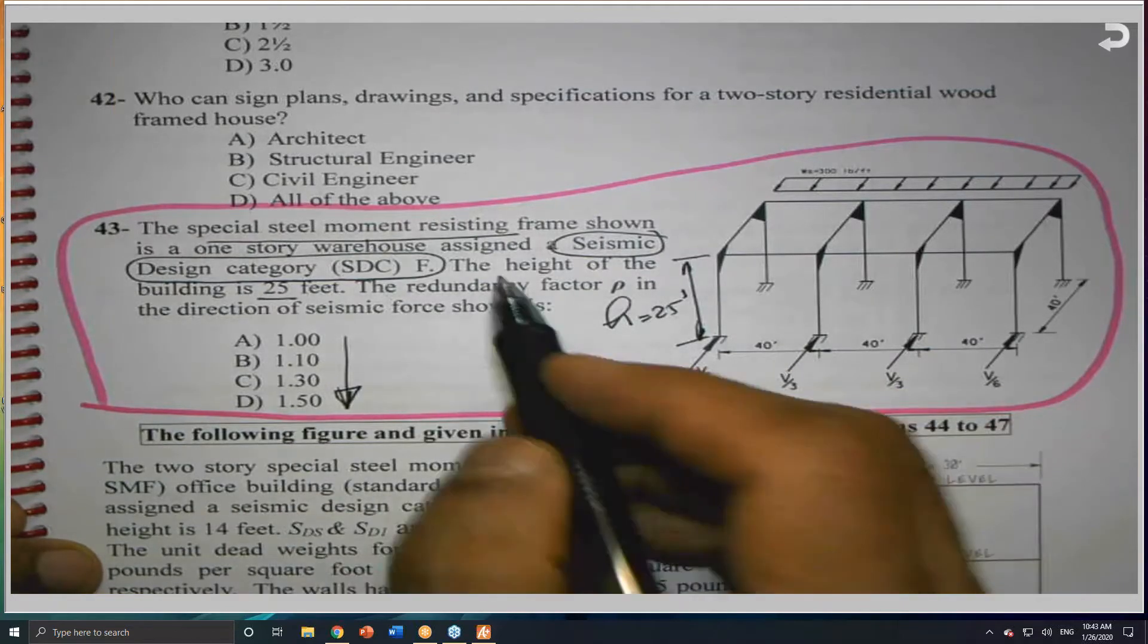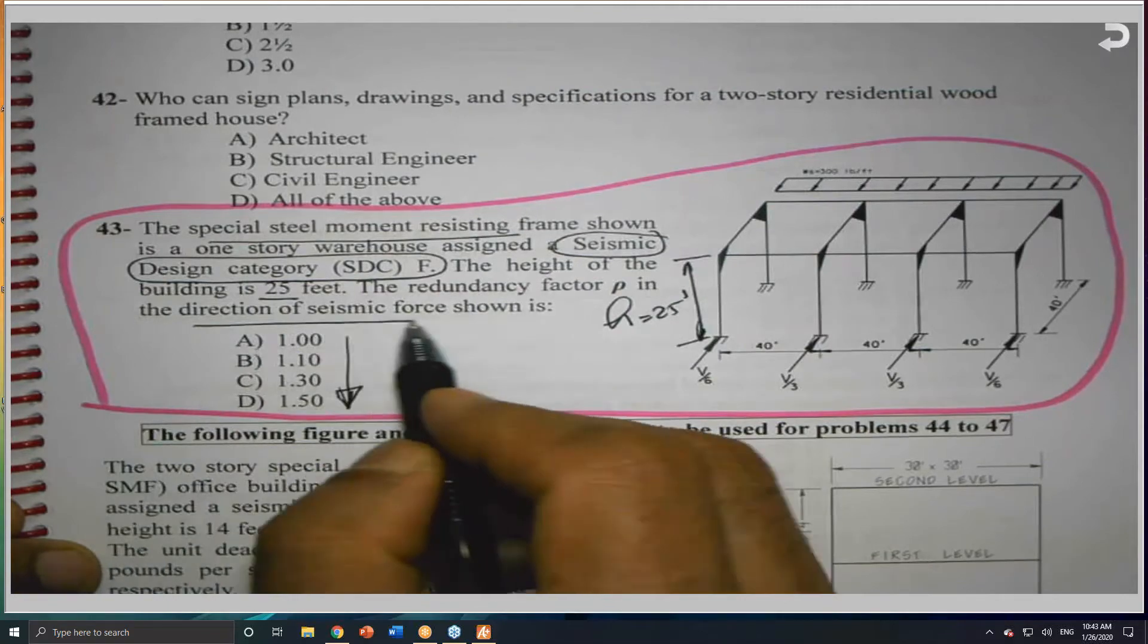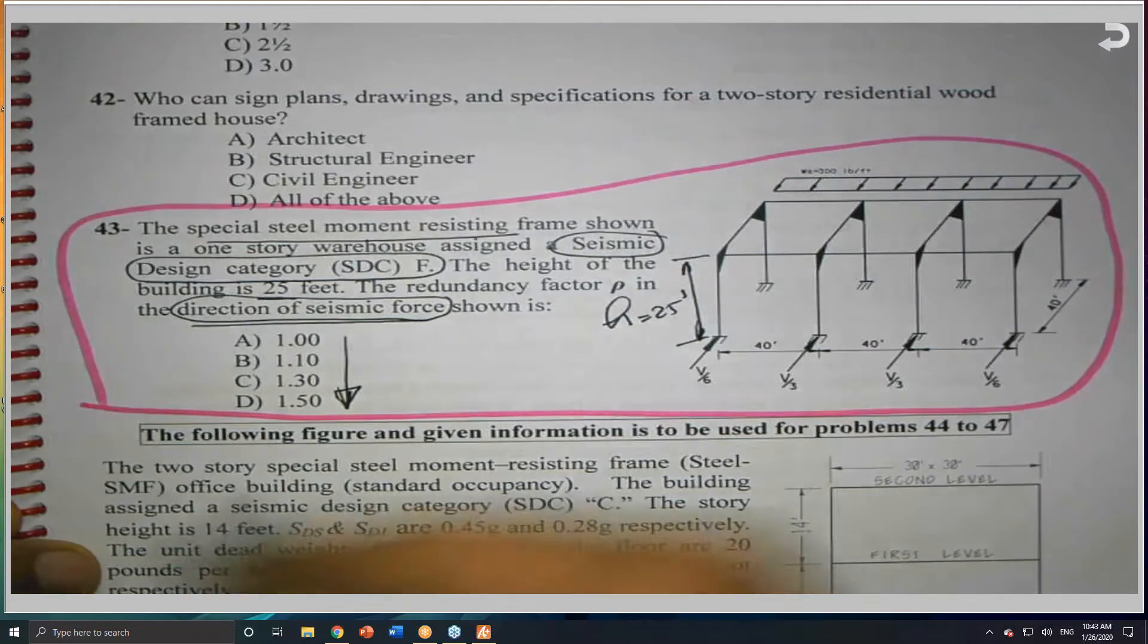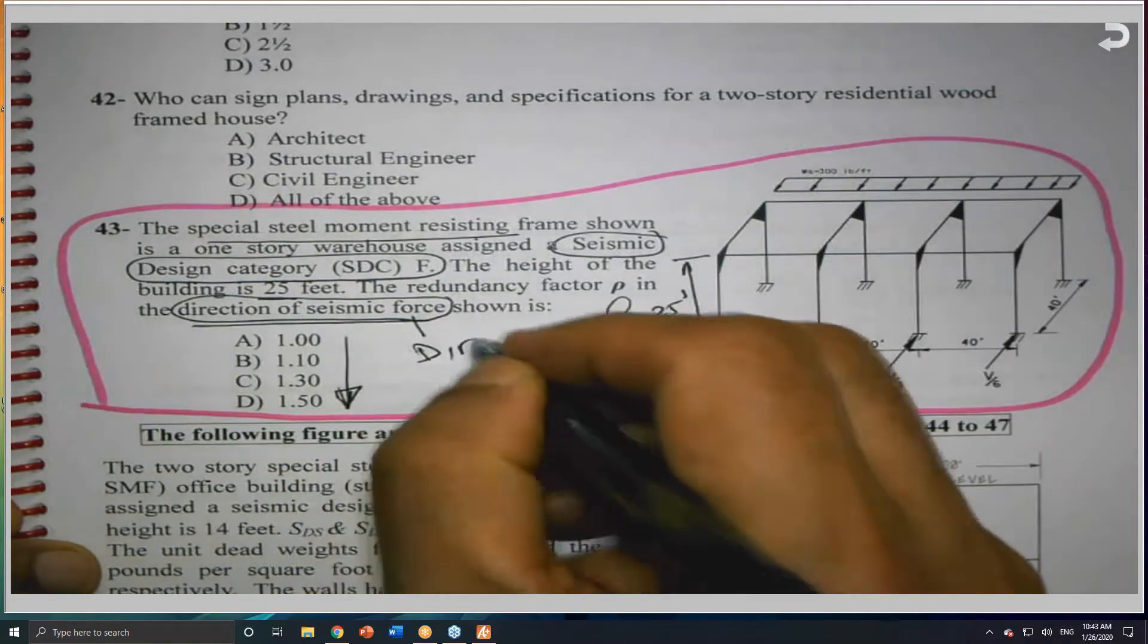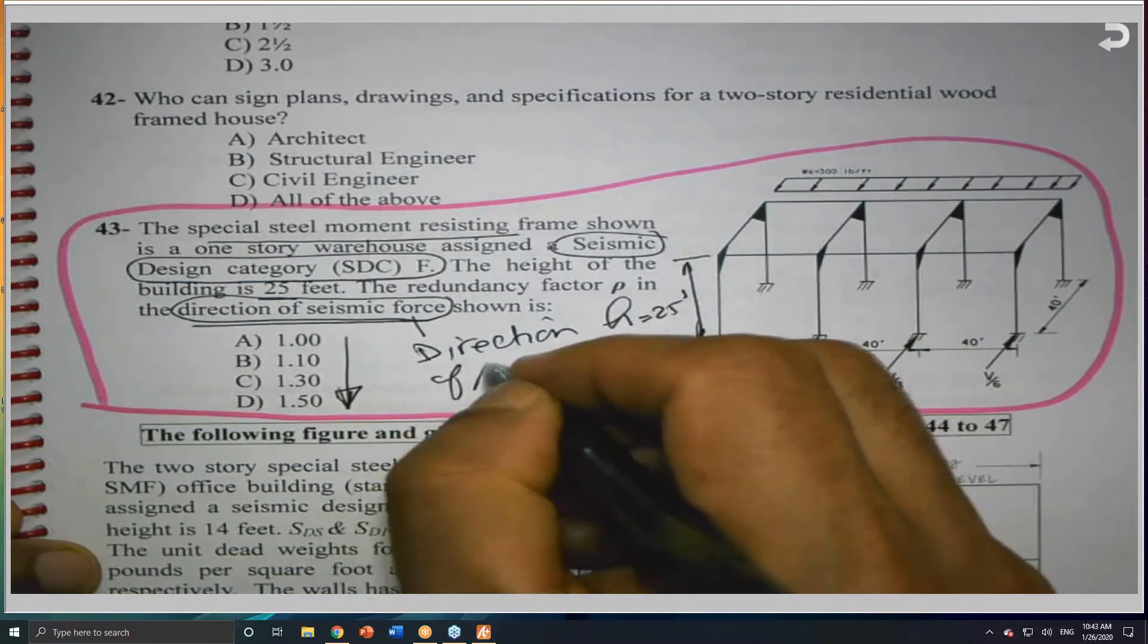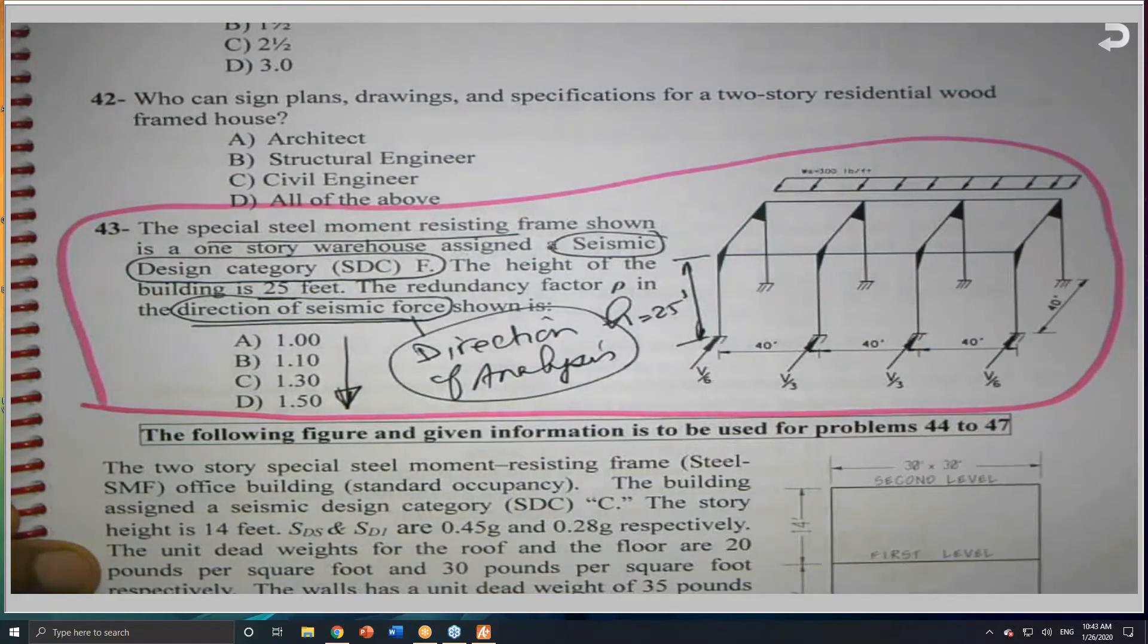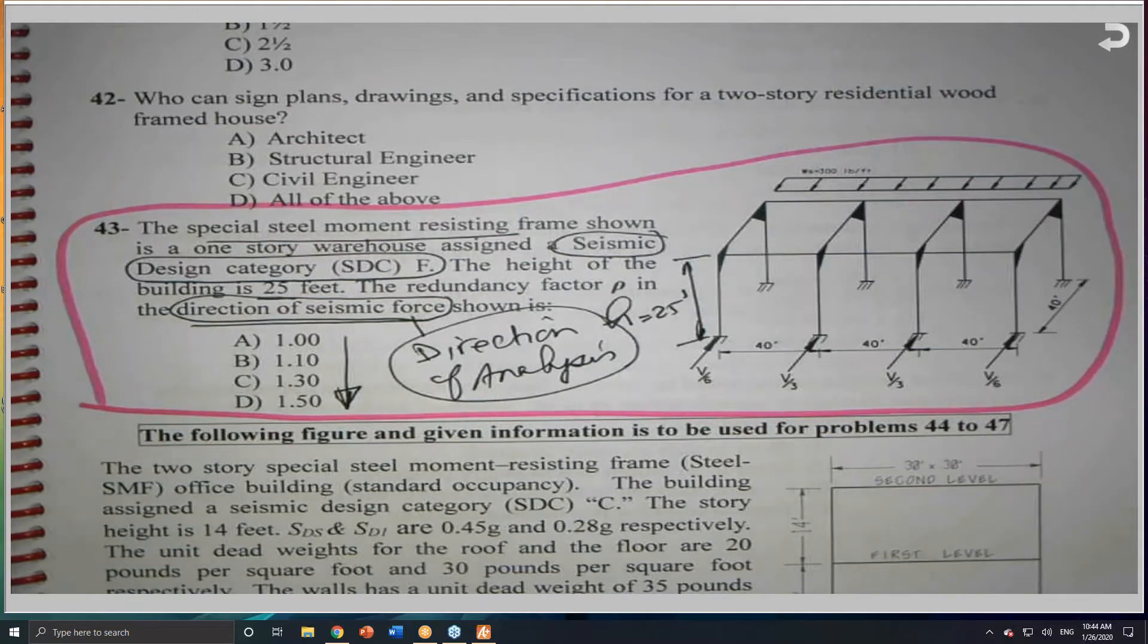And the most important, the direction of the analysis. Something is very important. Direction of analysis. On the exam, they will tell you what is the direction of the analysis. But in real life, when we design a structure, we consider both orthogonal directions and pick the most severe one. But for the sake of the exam, he must specify one direction, because you don't have time to analyze the structure in all directions.